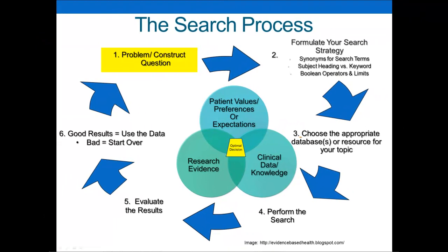You will notice that the first step — having a problem and trying to construct a clear research question — is the first step of a six-step search process that you'll go through. Doing well with each step and being methodical and thinking through it will help you to be more successful in doing a search.